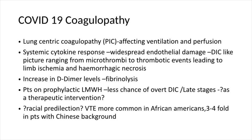The coagulopathy is the main fatal manifestation, causing a predominant lung-centric coagulopathy affecting both ventilation and perfusion, as ACE2 is expressed in pneumocytes as well as endothelial cells of the lung vasculature. This leads to a systemic cytokine response which can aggravate pulmonary vasculopathy, leading to a DIC picture in the lungs called pulmonary intravascular coagulation. As the disease gets severe, the cytokine response affects the whole endothelial system, ranging from microthrombosis to thrombotic events leading to limb ischemia and hemorrhagic necrosis.